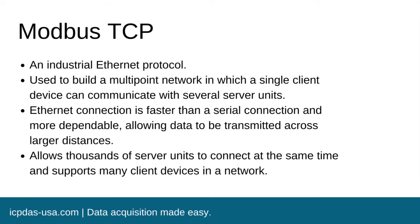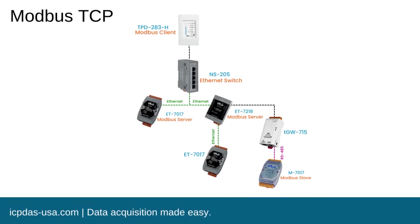A message is wrapped in the TCP packet, which is then wrapped in the IP packet, which is subsequently transmitted using Ethernet electrical signaling. Modbus TCP's primary role is to ensure that data packets are received correctly, whereas IP ensures that messages are addressed and routed correctly.